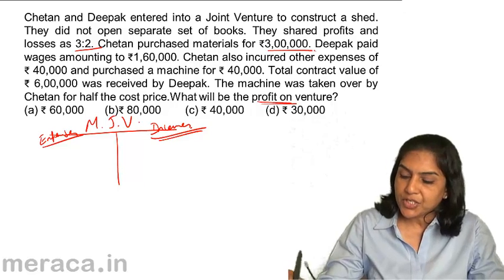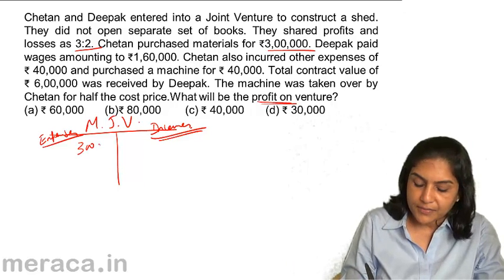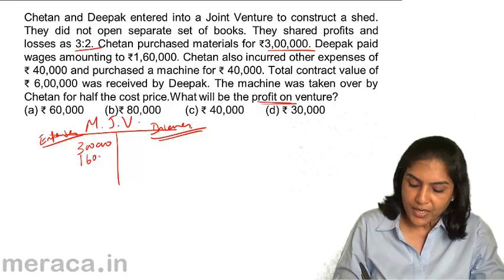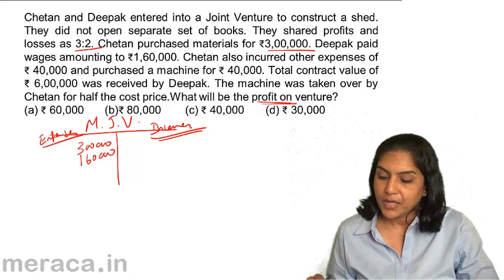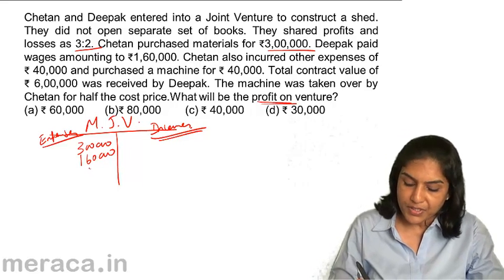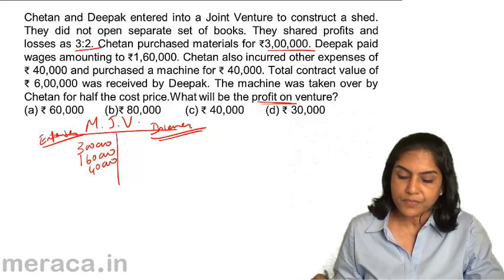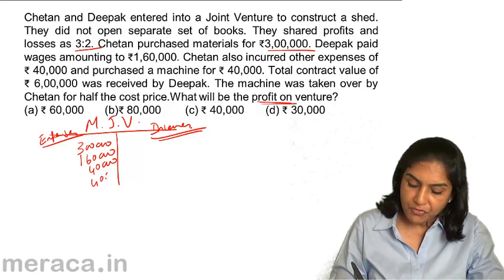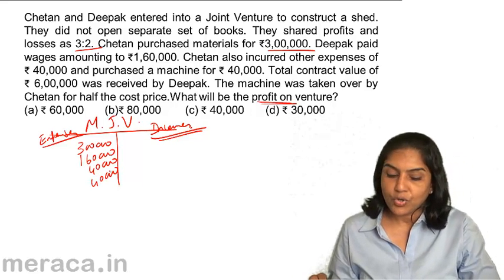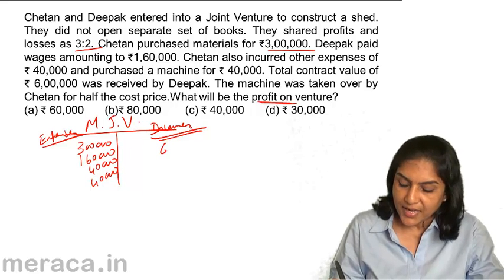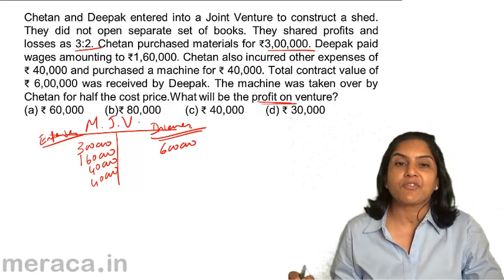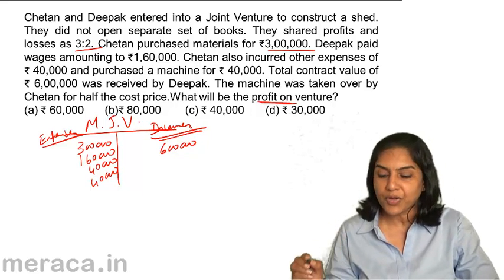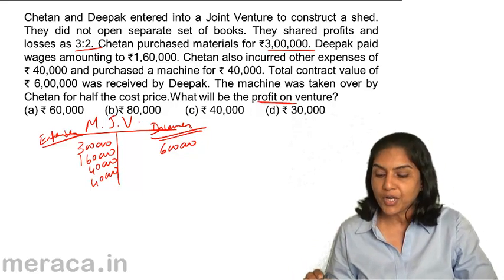We will start: Chetan purchased materials for ₹3 lakh. Deepak paid wages amounting to ₹1,60,000. Chetan also incurred other expenses of ₹40,000. Purchased machinery again for ₹40,000. Total contract value is ₹6 lakh. Notice that we have not bothered to see whether this was Chetan's expense or Deepak's expense, because all we are asked to do is find out the profit on venture.